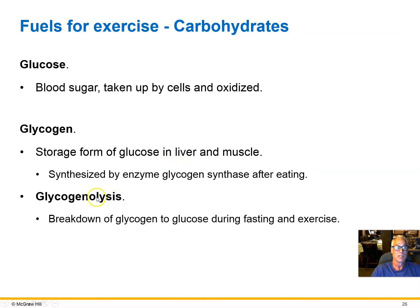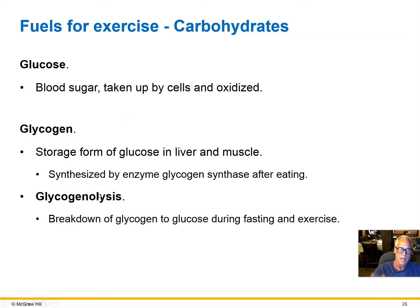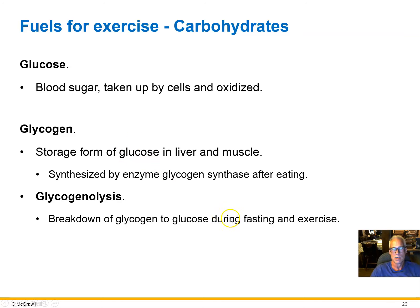Glycogenolysis is the process of getting those glucose molecules back. After a meal, we store glucose in the form of glycogen. Then during exercise, glycogenolysis takes place — we break down the glycogen and release glucose back into the blood or into the muscle cell cytoplasm to power muscle contraction and make ATP.